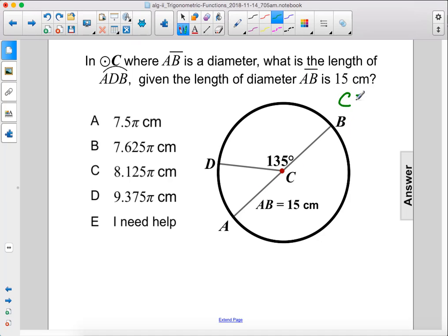Alright, the circumference formula is 2πR, or πD, since D is 2R. In this case, D is 15 centimeters, so the circumference of this whole circle is 15π.